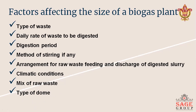The key factors affecting the size of a biogas plant are: the type of waste being used, whether solid, liquid, or semi-solid; the daily rate of waste to be digested; the digestion period, that is how much time is needed for digestion of the slurry; the method of stirring, if any; and the arrangement of raw waste feeding and discharge of digested slurry, that is the inlet and outlet pipes.